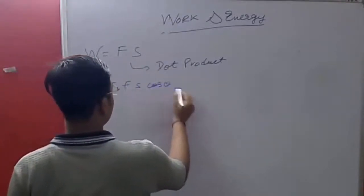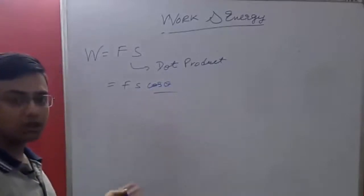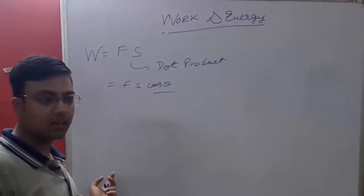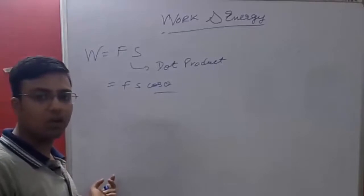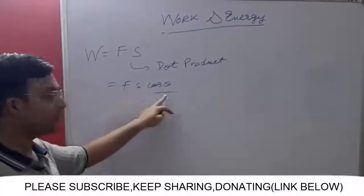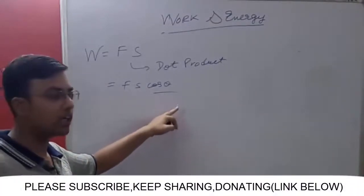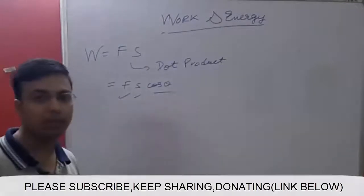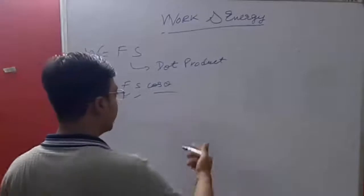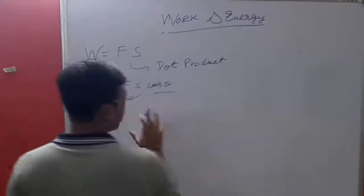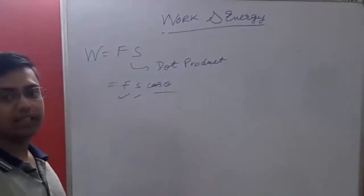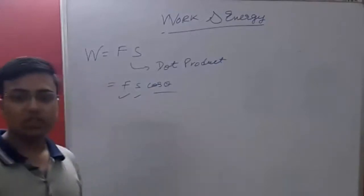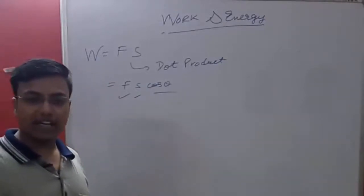Now we have seen how work done is calculated. The key question is: what is this cosθ? We know F and S — we know cosθ. Basically, F and S are vectors. Vectors have both magnitude and direction. For example, 5 degrees north or 5 degrees south — this specifies a direction, making it a vector.